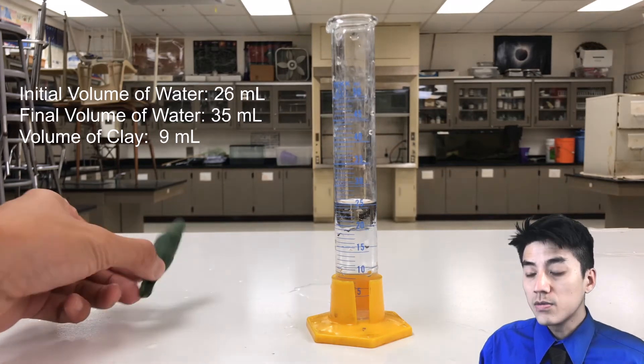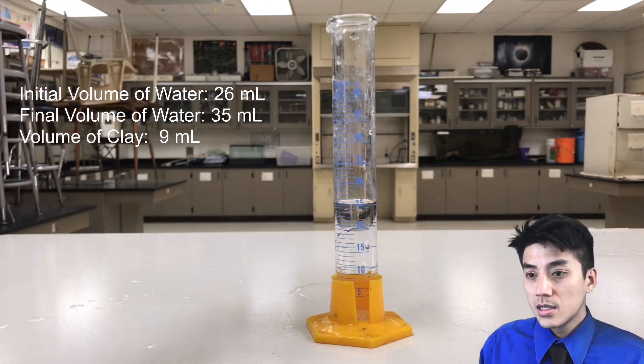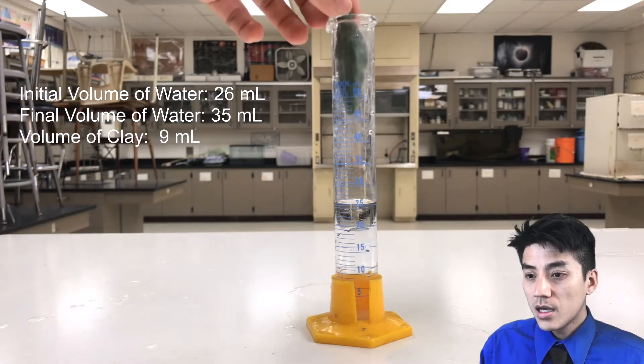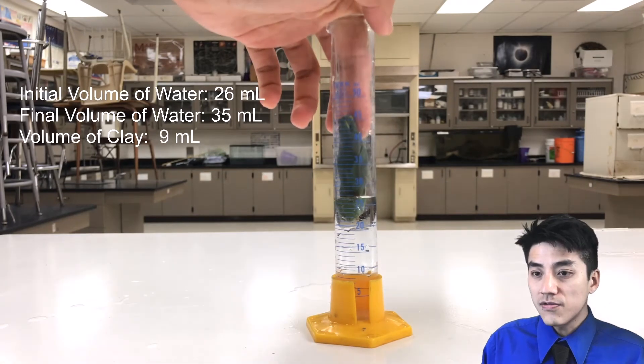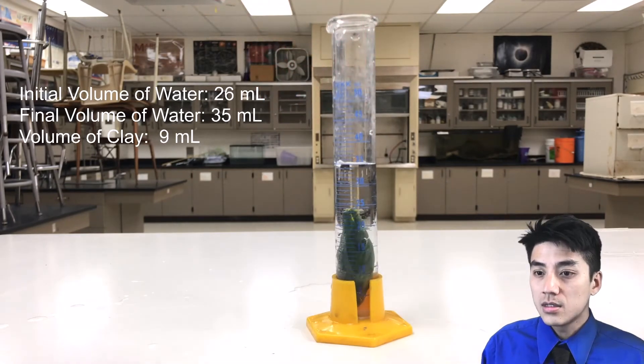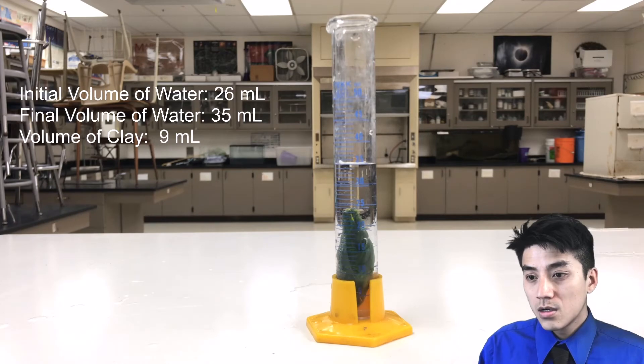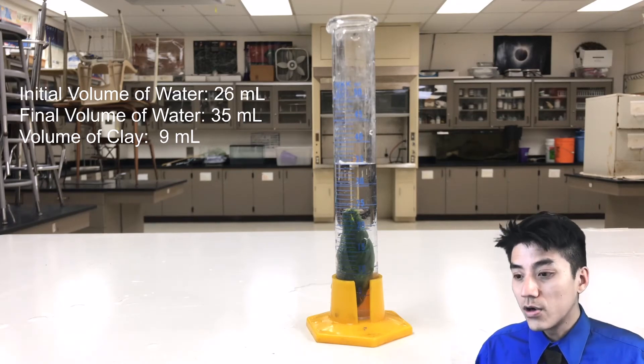And you can see here again, we start at 26, put it in, and now the water level rises to 35. So some quick arithmetic would tell you that the volume of clay is 9.